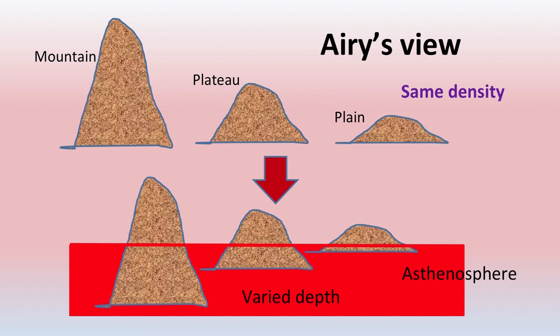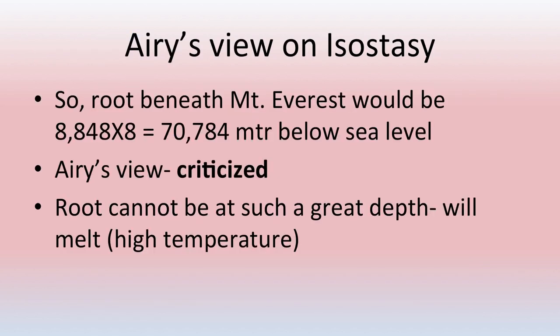Taking Airy's view into consideration for the earth surface, three types of features are shown — mountains, plains, and plateaus — when immersed in the asthenosphere. Mountains go deeper compared to plateaus and then plains. According to Airy's viewpoint, the root beneath Mount Everest would be approximately 70,784 meters below sea level. Airy was criticized on this ground because at that depth it would melt, as it is very hot inside the earth.